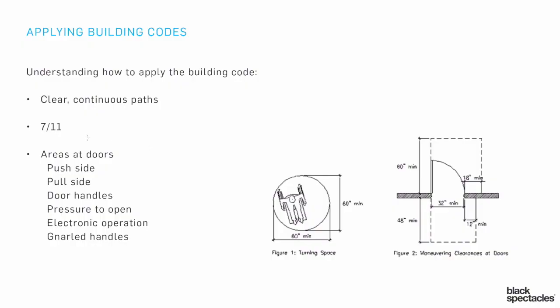If I have an accessible entrance, I have to have a clear accessible path that gets to the entrance and then into the building. So you have to think of it as a continuity of a process.